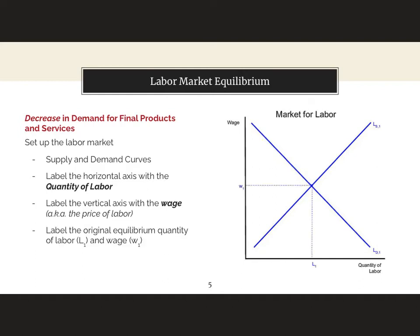Now let's label the original equilibrium wage w1 and l1. If a labor market is in equilibrium like this there is no unemployment. The quantity of labor demanded, which is how much businesses want to hire, is equal to the quantity of labor supplied, which is how much people want to work. Everybody that wants to work gets a job and there's no unemployment.